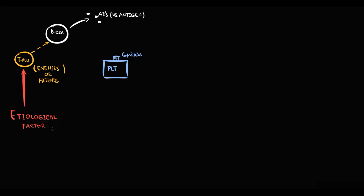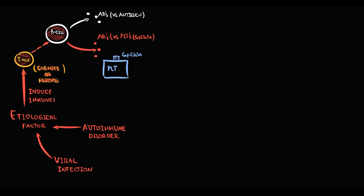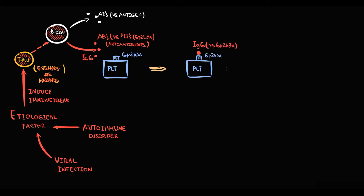However, viral infection or autoimmune disorder can affect T-cell function. In the affected state, T-cells cannot recognize which cells are friends and which are antigens. In this state, T-cells force B cells to produce immunoglobulin G antibodies against platelets — specifically against the GP2B3A receptor on the platelet surface. This condition is called immune break; antibodies against self-cells are called autoantibodies. Importantly, these are immunoglobulin G autoantibodies, which bind to platelets and circulate until they reach the spleen.